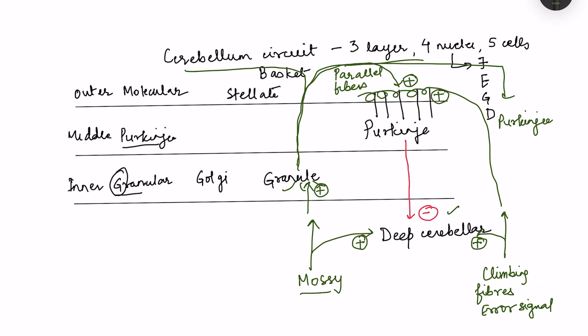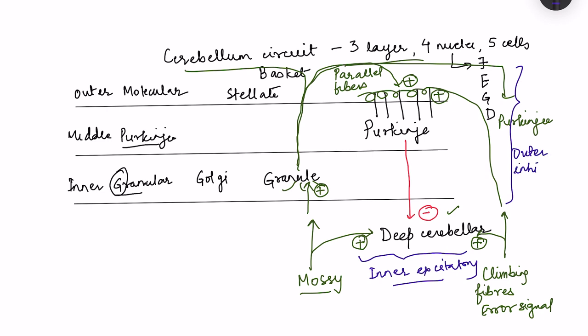The direct excitation of deep cerebellar nuclei by the input fibers is called the inner excitatory loop. The pathway where input fibers excite Purkinje cells, which then inhibit the deep cerebellar nuclei, is called the outer inhibitory loop — it is 'inhibitory' because it indirectly inhibits the deep cerebellar nuclei by first exciting the Purkinje cells. This is the fundamental basic circuitry of cerebellar input.